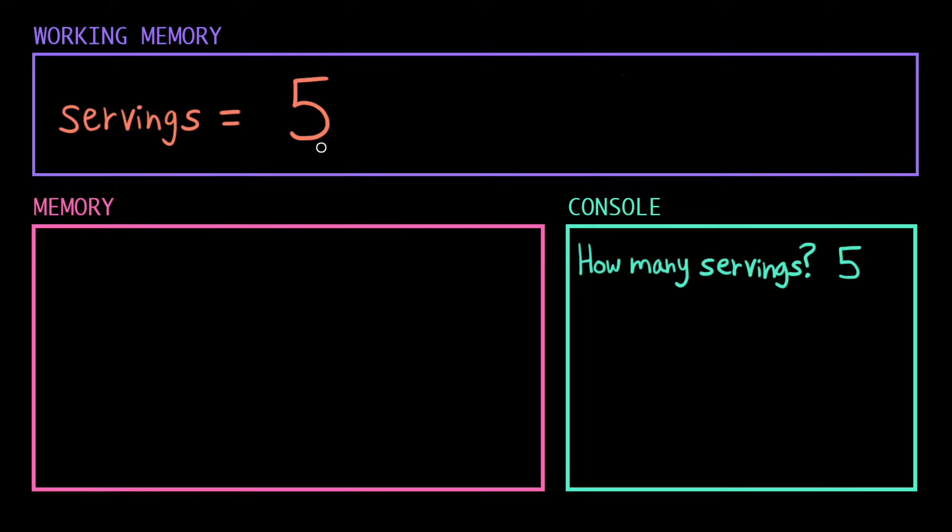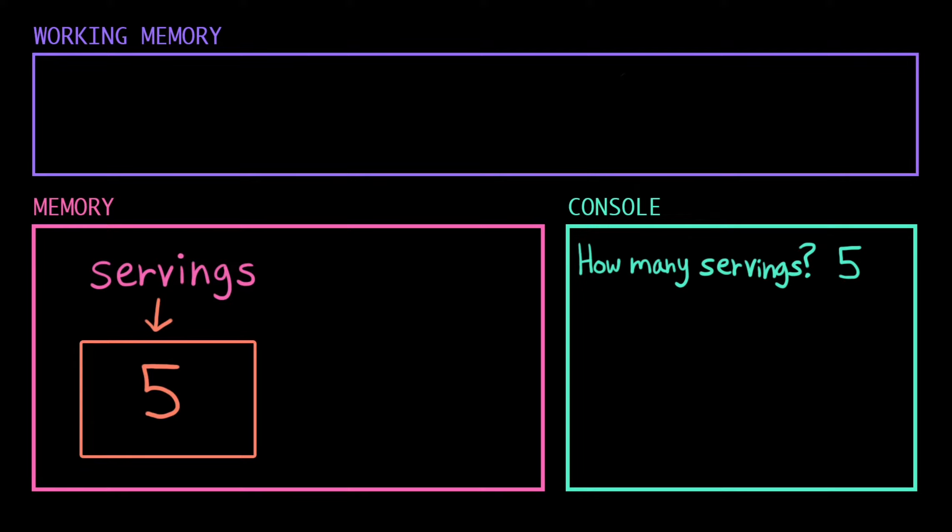Now we just have a standard assignment statement. This statement tells the computer to go off to its memory, allocate a new chunk of it to remember a new value. Then it tags it with the name servings and sticks that value 5 in there. This instruction is now complete. The computer did everything, so it's going to clear out that working memory and look for that next line of the program.